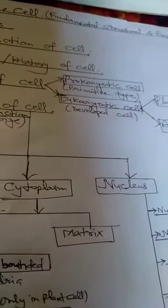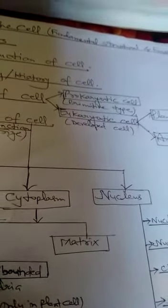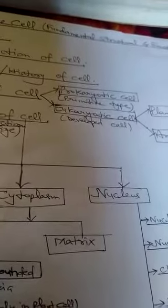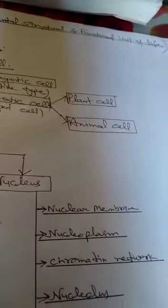Prokaryotic, primitive type of cell, ill-developed cell. And then, developed cell is called eukaryotic cell. Again, eukaryotic cell is of two types, plant cell and animal cells.